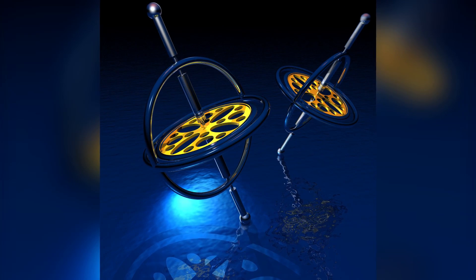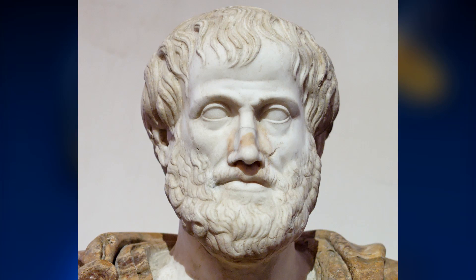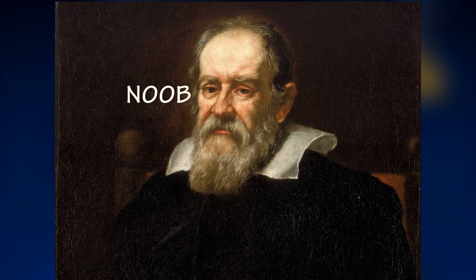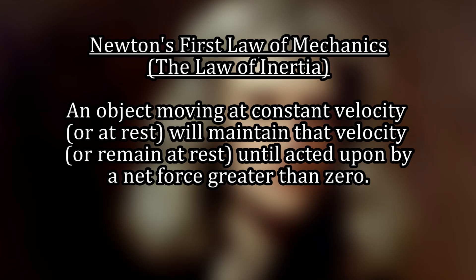Why would it not keep moving? What force would prevent it from following the earth as it rotates? Just like geocentrists, flat earthers buy into the Aristotelian theory of motion — if it can even be called a theory — long since disproved by people like Galileo and Newton. Aristotle believed that uniform motion requires continuous application of force. It doesn't. Force is only required to change the speed or direction of motion. That's Newton's first law of mechanics. An object moving at constant velocity, or at rest, will maintain that velocity, or remain at rest, until acted upon by a net force greater than zero. This is also known as the law of inertia.